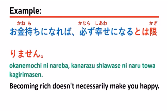In this example, they use a verb — the verb is なる, which is in the dictionary form. After the verb, it is followed by とは限りません. 限りません and 限らない are just the same, but one is in the masu form and the other in the plain form. The masu form is more polite than the plain form, so you can use 限りません.